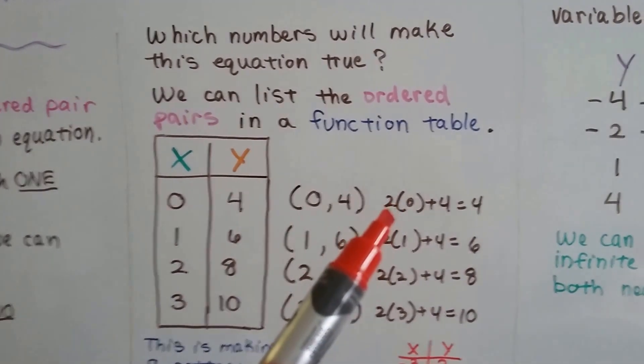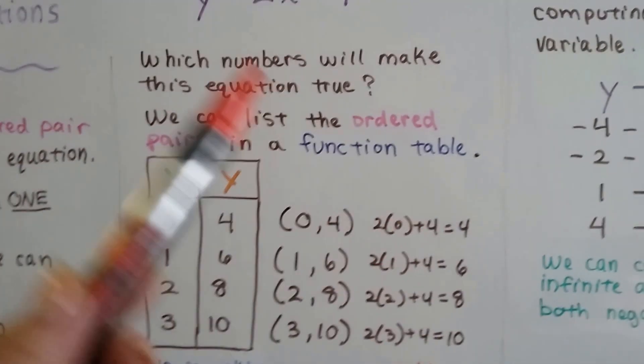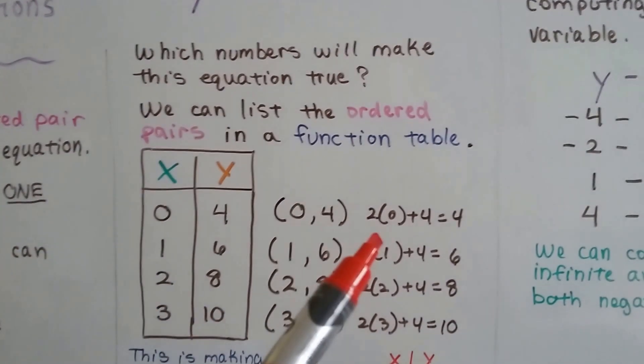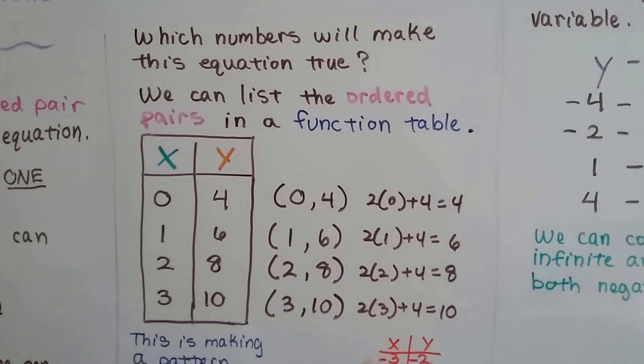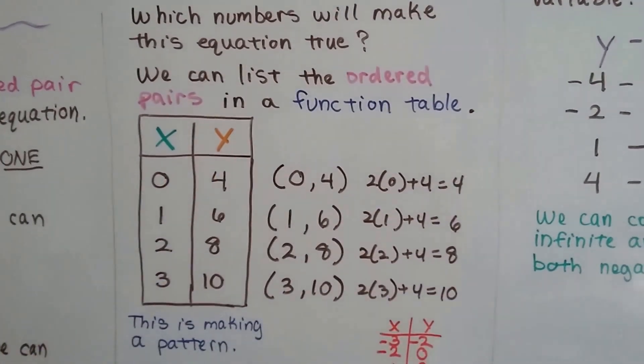If x is a 0, then that means we have 2 times 0 plus 4. 2 times 0 plus 4. 0 plus 4, our y value would be a 4, so we write the 4 in our table.